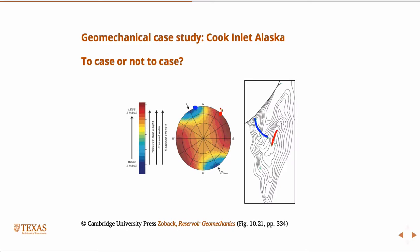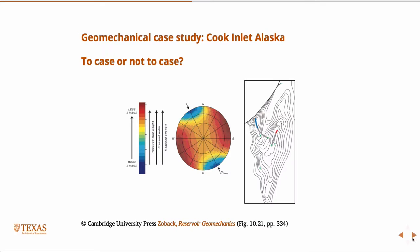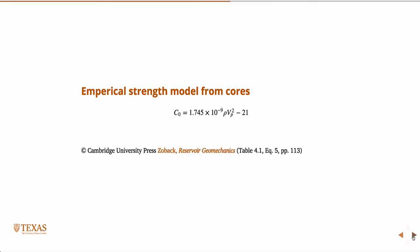So, given this, you have an idea of where it's safe to drill, if you will. The more stable wellbores are going to be horizontal wells in these directions. Horizontal wells in those directions would require casing. So then the next question would be, now that we sort of know which direction to drill, where would we kick off?